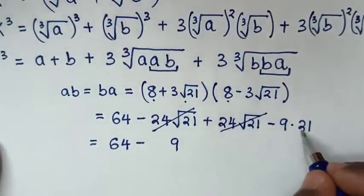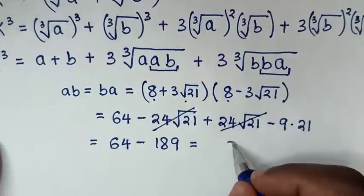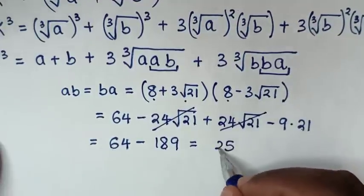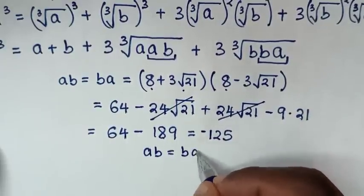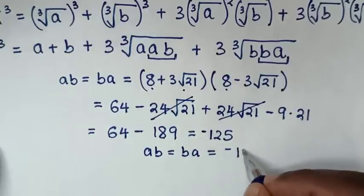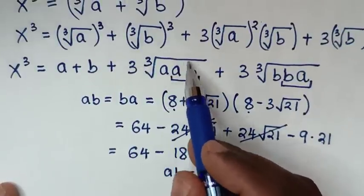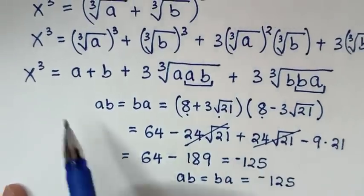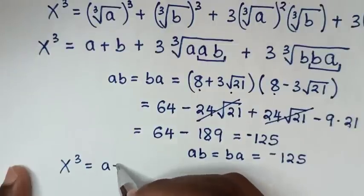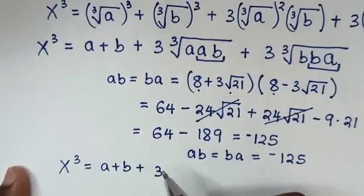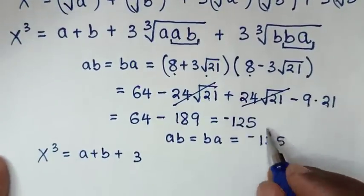9 times 1 is 9, 9 times 20 is 180, so 9 times 21 is 189. Therefore 64 minus 189 equals negative 125. So a times b equals negative 125. We substitute negative 125 for a·b. So x³ equals a plus b plus 3 times cube root of a times b, which is cube root of negative 125.